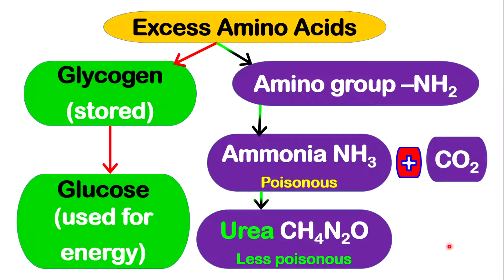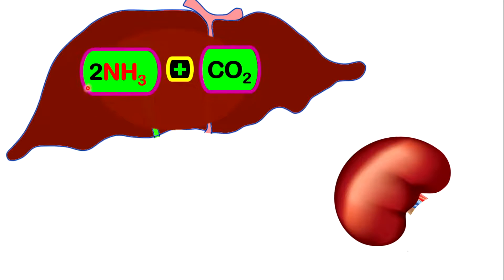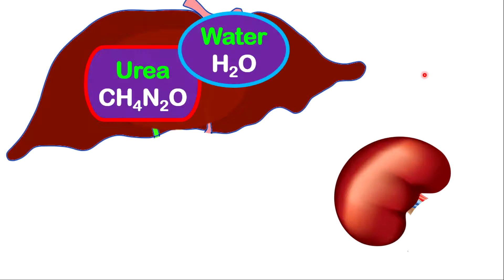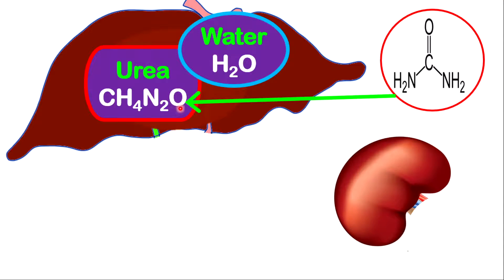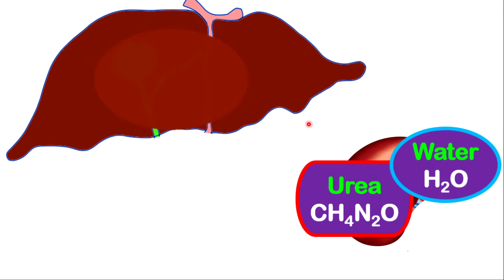Within the liver, when there is an excess amount of amino acids, the amino group is removed and converted to ammonia, which is poisonous. Two molecules of ammonia will react with carbon dioxide to produce urea and water. The formula for urea can also be represented in structural form. Urea and water will then be sent to the kidneys, where they will be removed in the form of urine.